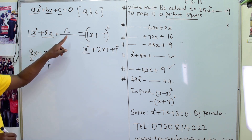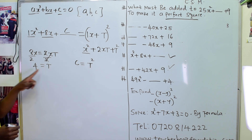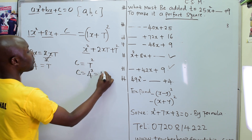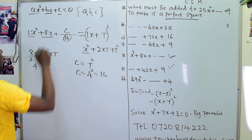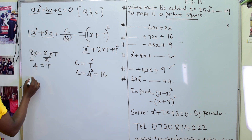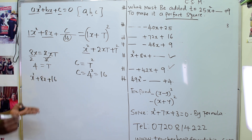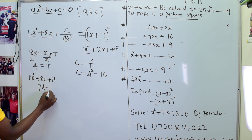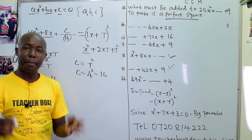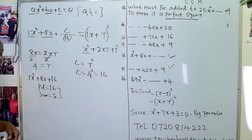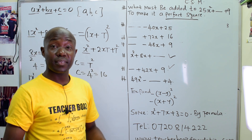When t equals 4, comparing the last parts: c equals t squared. Since t is 4, c equals 4 squared, which is 16. So what must be added to make it a perfect square is 16, which means x squared plus 8x plus 16 is a perfect square. The product is 1 times 16 equals 16, the sum is 8, and the factors are 4 and 4. Because 4 times 4 is 16 and 4 plus 4 is 8.